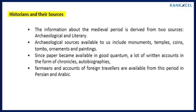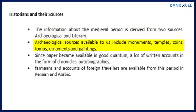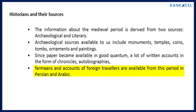The information about the medieval period is derived from two sources: archaeological and literary. Archaeological sources include monuments, temples, coins, tombs, ornaments, and paintings. Since paper became available in good quantity, many written accounts in the form of chronicles, autobiographies, farmans, and accounts of foreign travelers are available from this period, in Persian and Arabic.